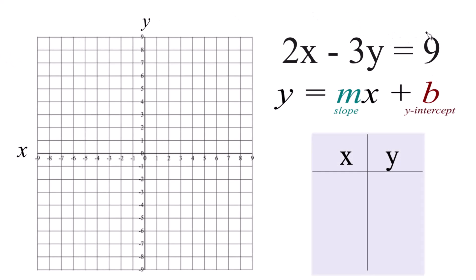In this video, we're going to graph the linear equation 2x minus 3y equals 9. Two ways we could do it.